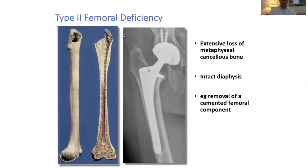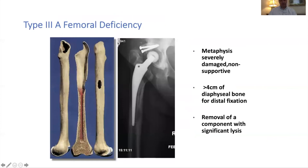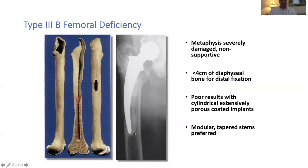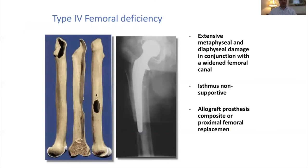In type 3A there is more extensive femoral loss — the metaphysis is badly damaged and there's increasing diaphyseal loss too. As this progresses you can lose the isthmus, leading to poorer results with classical extensive porous-coated implants. In type 4 — the stovepipe femur — there's very poor bone quality, a high medullary-to-cortex ratio, and these are the cases where you are talking about proximal femoral implants.